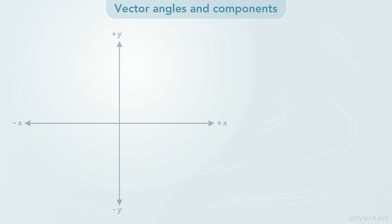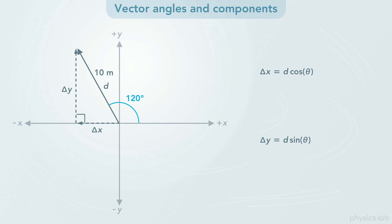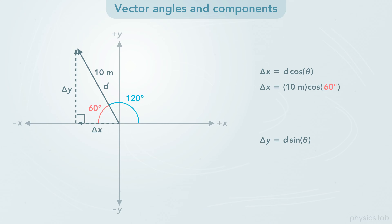So that's how we describe the angle. What about the components? Let's use this vector, which has an angle of 120 degrees. Remember, the vector and components form a right triangle, so we use the trig functions to find the components. If we want to use the angle that's inside the right triangle, then we subtract 180 degrees minus 120 degrees to get 60 degrees. This is what we call a reference angle. The reference angle will always be a positive acute angle between 0 and 90 degrees. The x component would be 10 meters times the cosine of 60 degrees, which gives us 5 meters.